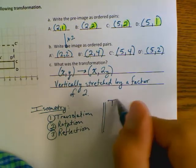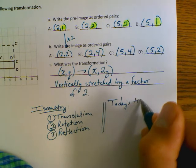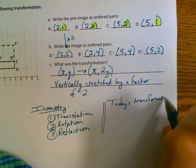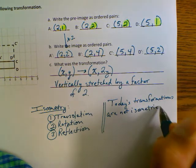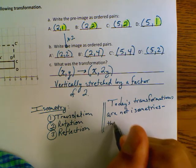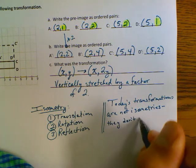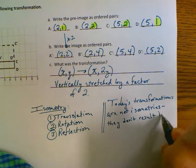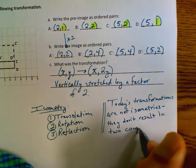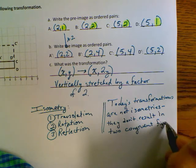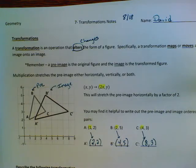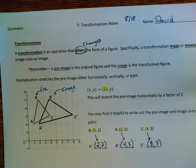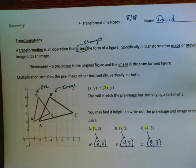Today's transformations are not isometries because they do not result in congruent figures. And that's all I have for you today. So today's lesson was all about transformations and how transformation can stretch something horizontally or vertically or both, although we didn't really run into any that did both in these notes.